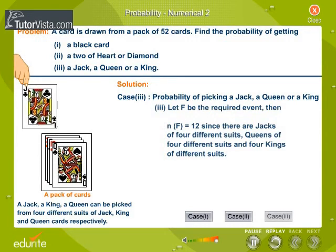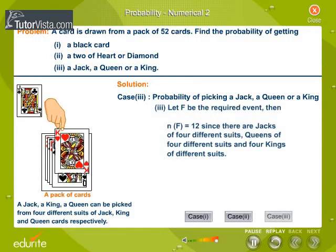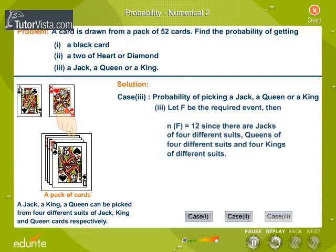Let F be the required event. Then, N(F) is equal to 12, since there are jacks of 4 different suits, queens of 4 different suits and 4 kings of different suits. Therefore, a jack, a king or a queen can be picked from 12 cards. We know N(S) is equal to 52.